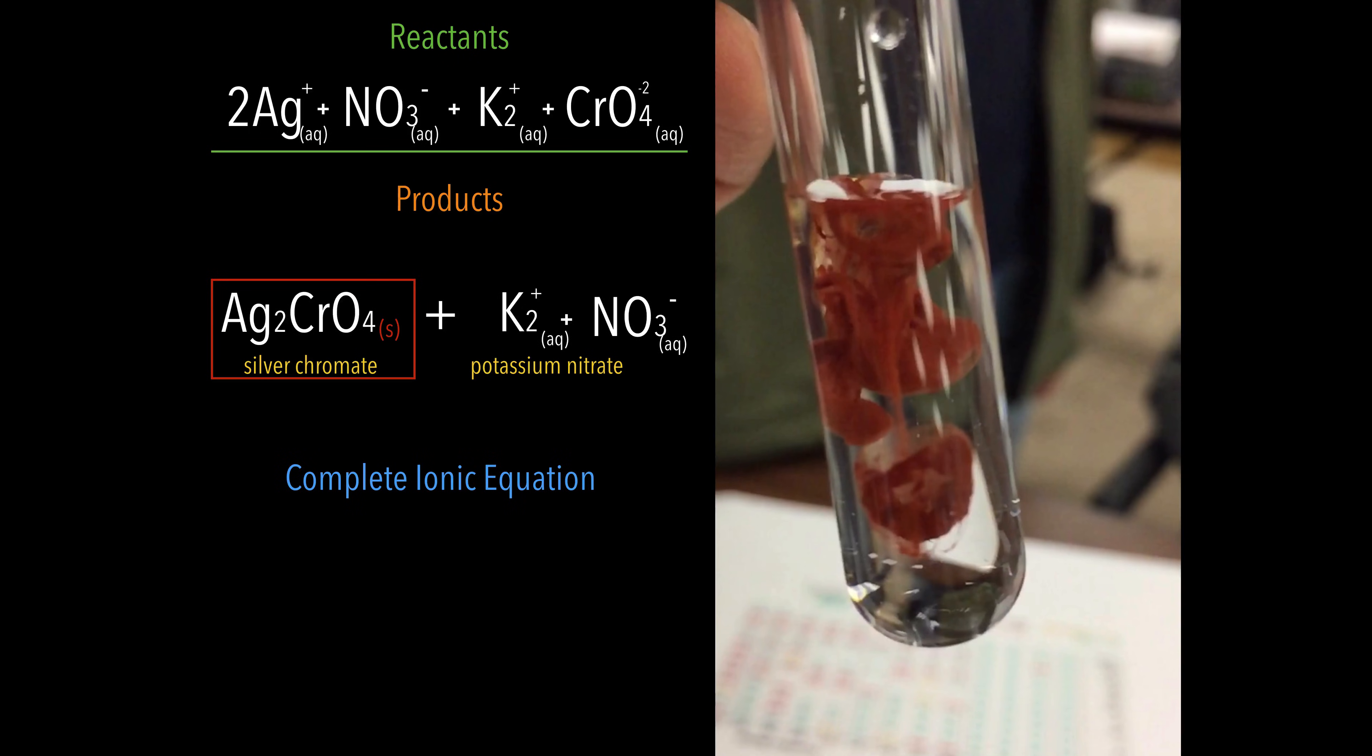So the complete ionic equation, that's what this is. We want to now go from a complete ionic equation to a net ionic equation. We're going to go atom by atom, element by element, to see what is involved in the reaction.